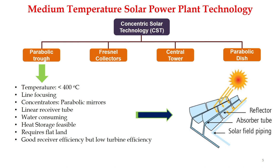Parabolic trough: its temperature range is below 400°C and it is a line focusing system, meaning only single axis tracking is employed. These concentrators are parabolic mirrors and it has a linear receiver tube. This system consumes water and heat storage is possible — once hot fluid is generated, it can be stored in an insulated vessel to exchange heat with water and generate steam to produce electricity. The system requires flat surfaces and has good receiver efficiency but low turbine efficiency.